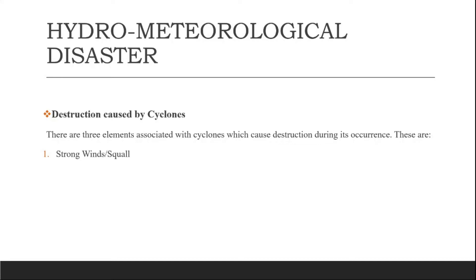The second element is torrential rains and inland flooding. Torrential rainfall means more than 30 centimeters per hour. Rain associated with cyclones is a major cause of damage — unabated rains give rise to unpredicted floods. Rainwater on top of storm surges adds to the fury of the storm. Heavy rainfall from cyclones is usually spread over a wide area and causes large-scale soil erosion and weakening of embankments.